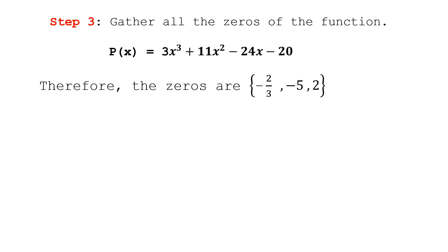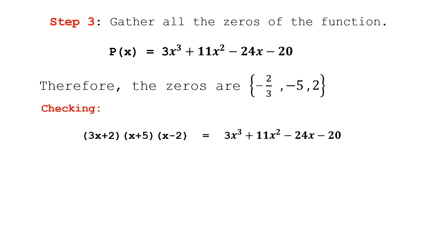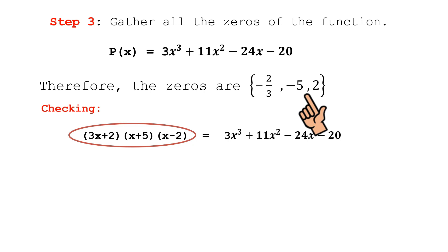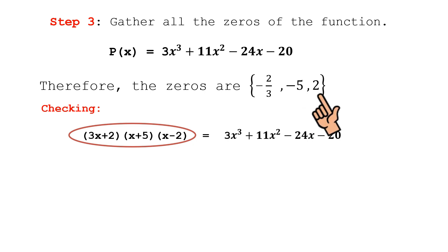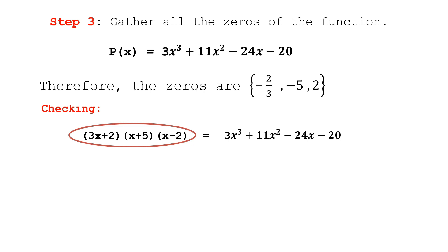The last step is to gather all the zeros. The zeros of p(x) = 3x³ + 11x² - 24x - 20 are: -2/3, -5, and 2. Let's verify these zeros by writing them in factor form: for -2/3 we write (3x + 2), for -5 we write (x + 5), and for 2 we write (x - 2). We multiply all three factors together and check that we recover the original polynomial.